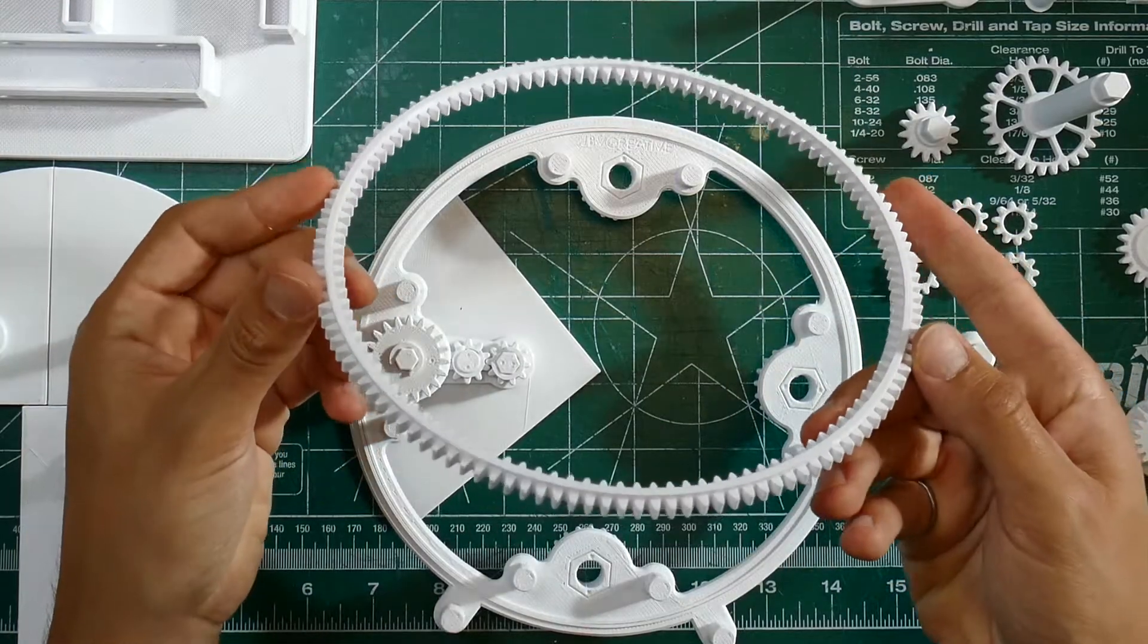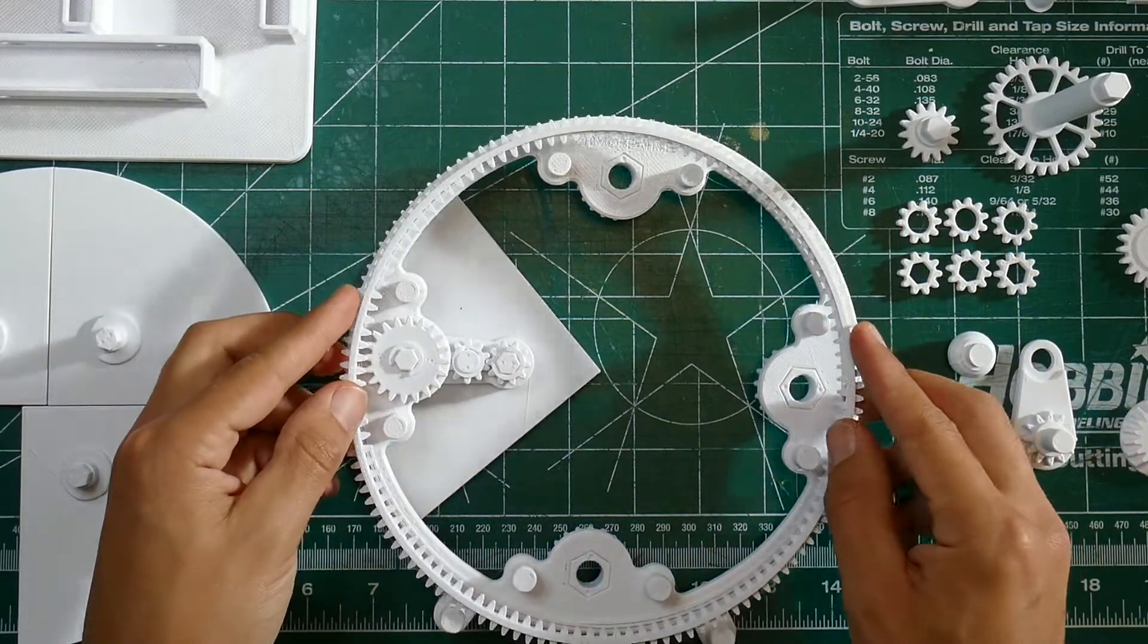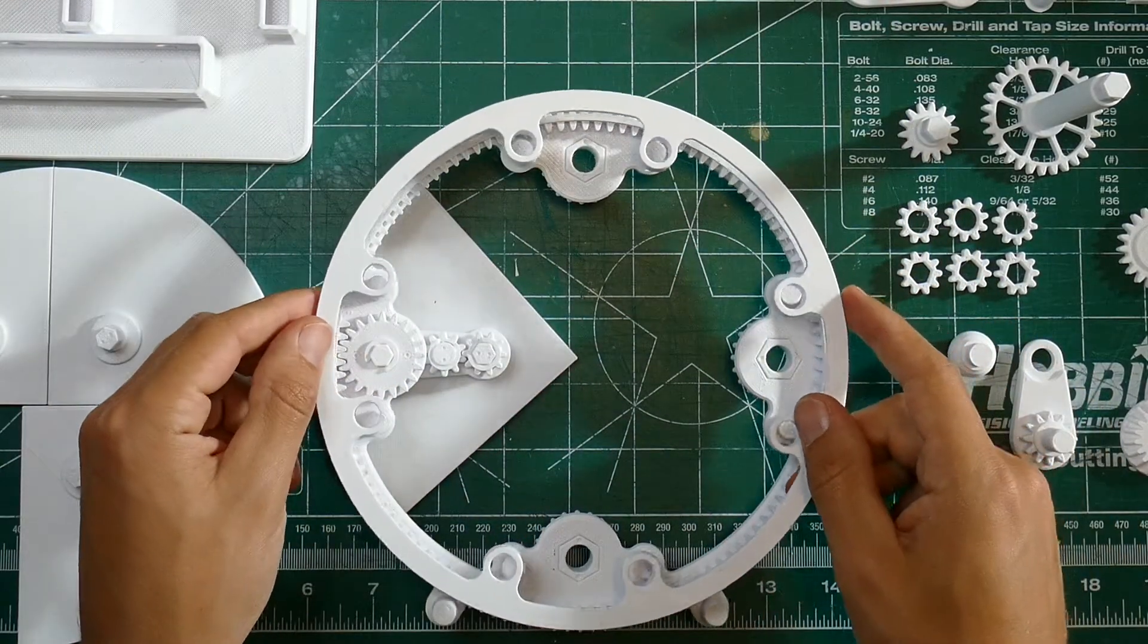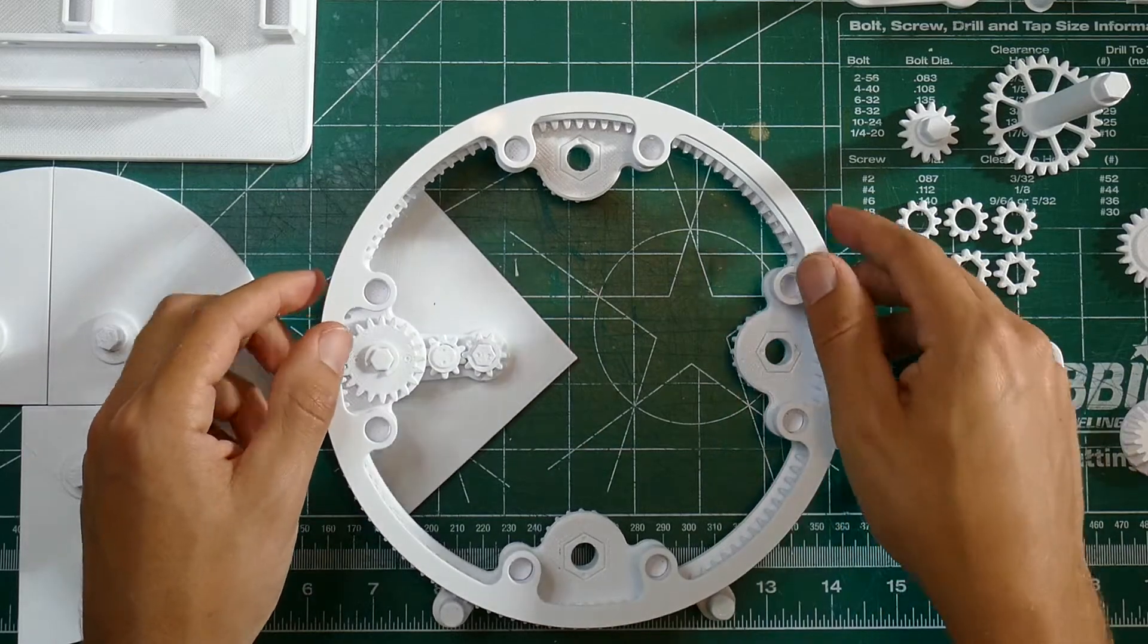Grab your big gear ring and put it in place just like this. Make sure that the flange is sticking up and then grab your retaining ring and place that over the holes and then push it down.